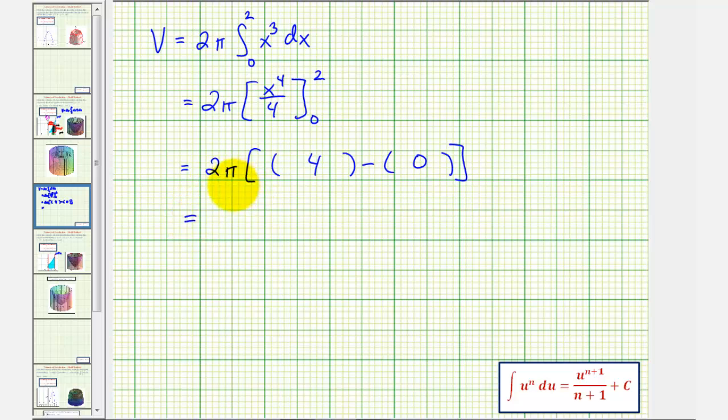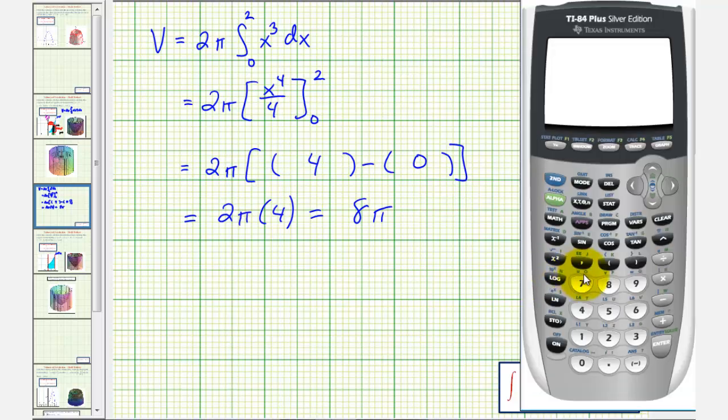So the volume is two pi times four cubic units, or eight pi cubic units. Let's also get our decimal approximation. So eight pi is approximately 25.1327.